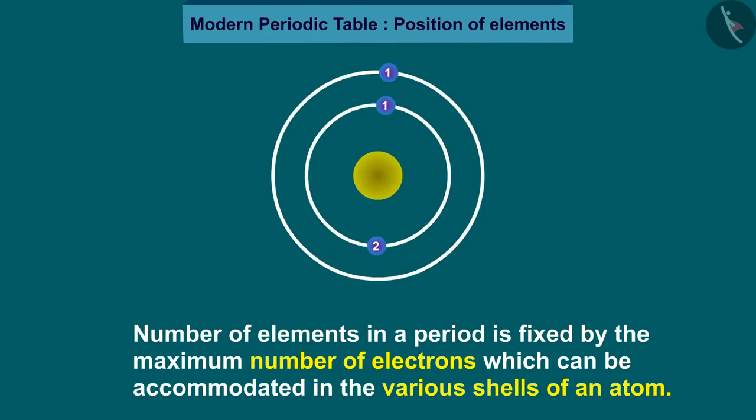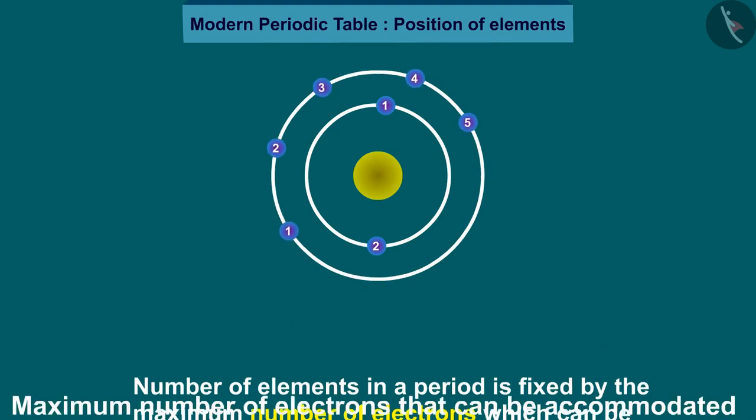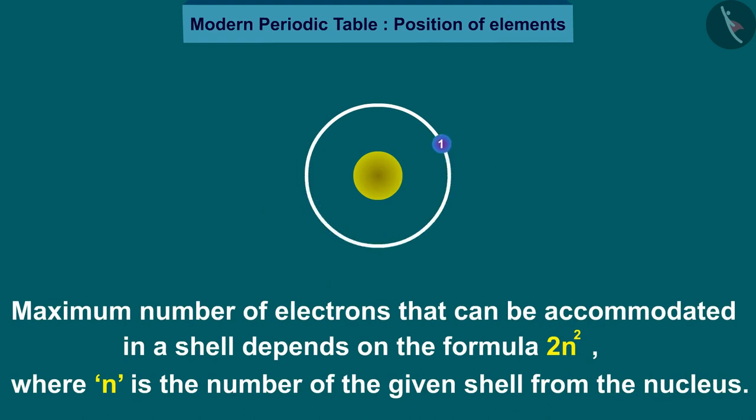The maximum number of electrons that can be accommodated in a shell depends on the formula 2n raised to 2, where n is the number of the given shell from the nucleus.